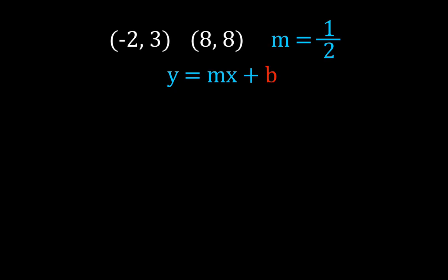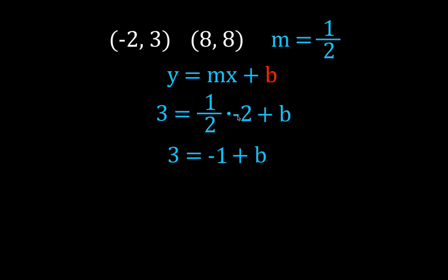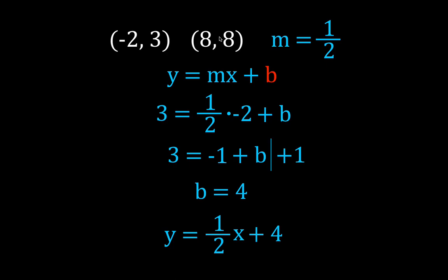Now we have the slope; we need to get b again. Plugging the values in — I chose the point (-2, 3): y is 3, slope is 1/2, x is minus 2, plus b. So 3 equals 1/2 times minus 2 which is minus 1, plus b. Moving the minus 1 over — add the opposite, plus 1 — gives us b equals 4, because 3 plus 1 is 4. The equation of the line through (-2, 3) and (8, 8) is y equals 1/2 x plus 4.